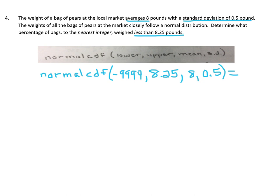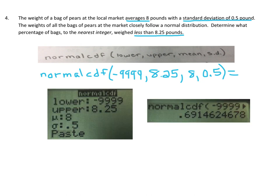In your calculator, go to 2nd VARS to get to distribution and choose choice 2, normal CDF. Plug in the lower bound, upper bound of 8.25, mean of 8, and standard deviation of 0.5, then click enter. The calculator gives a decimal result. To change to a percent, move the decimal over twice — we get 69.1, which rounds to the nearest integer as 69%.